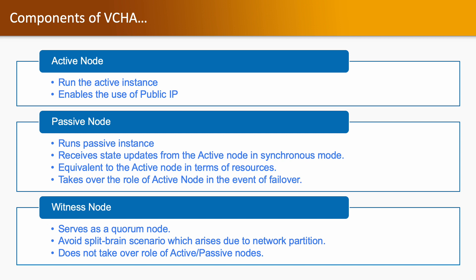The last component is the witness node, which helps during the split-brain scenario that arises during a network partition. The witness node does not take over the role of the active or passive node.